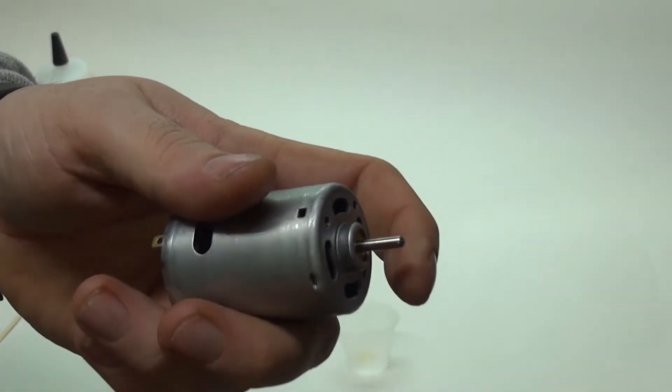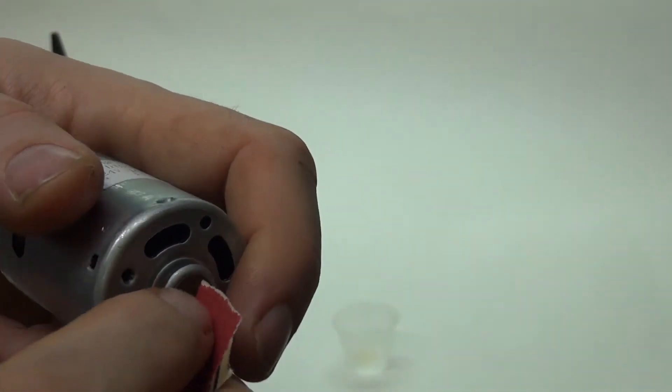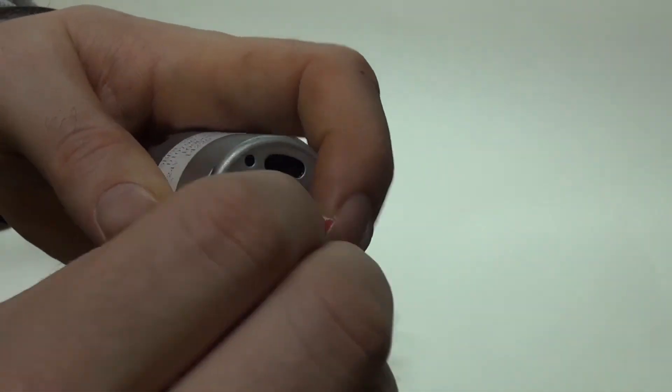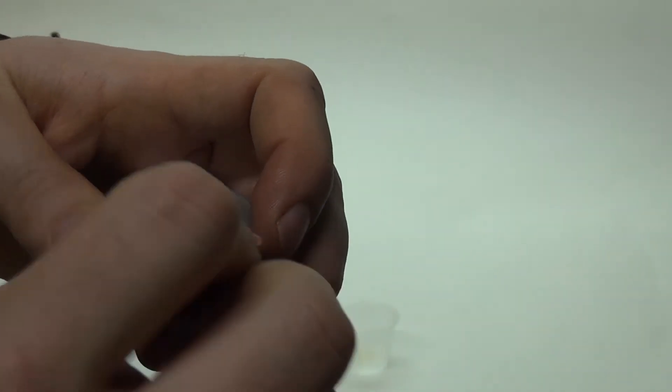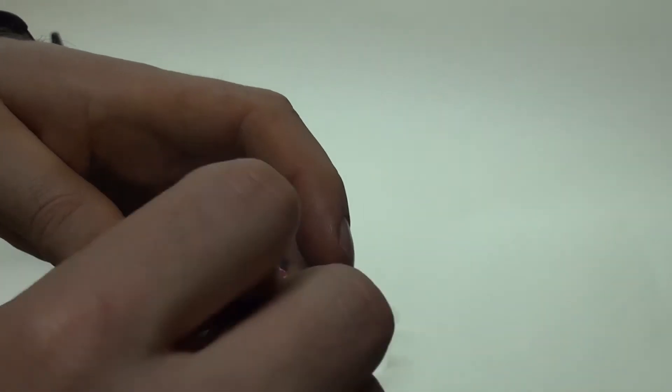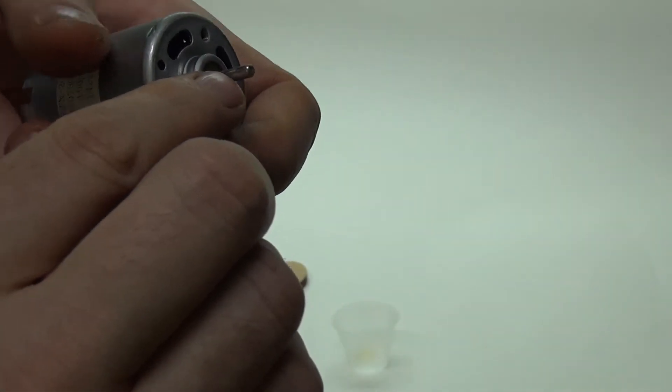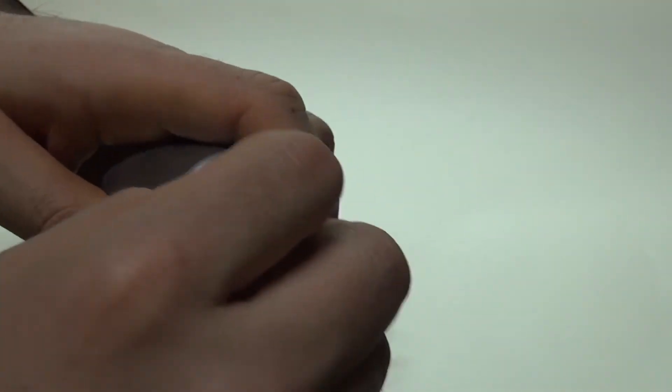The other thing you'll want to do is with a little piece of sandpaper, just sand this shaft a little bit to give it some scarring so that the epoxy can better adhere to this metal shaft. That's pretty much all that's required.